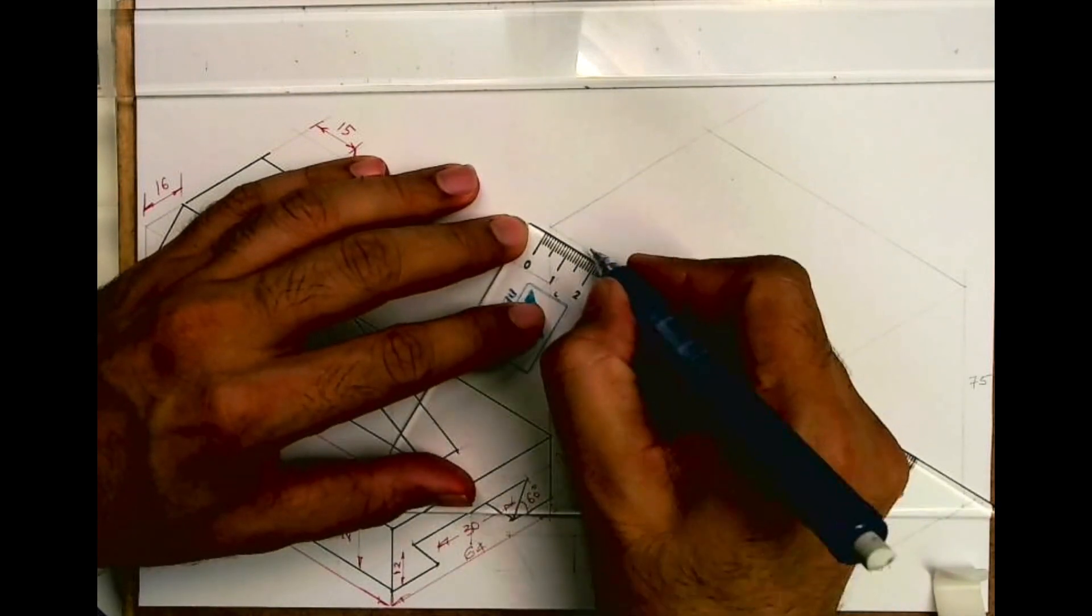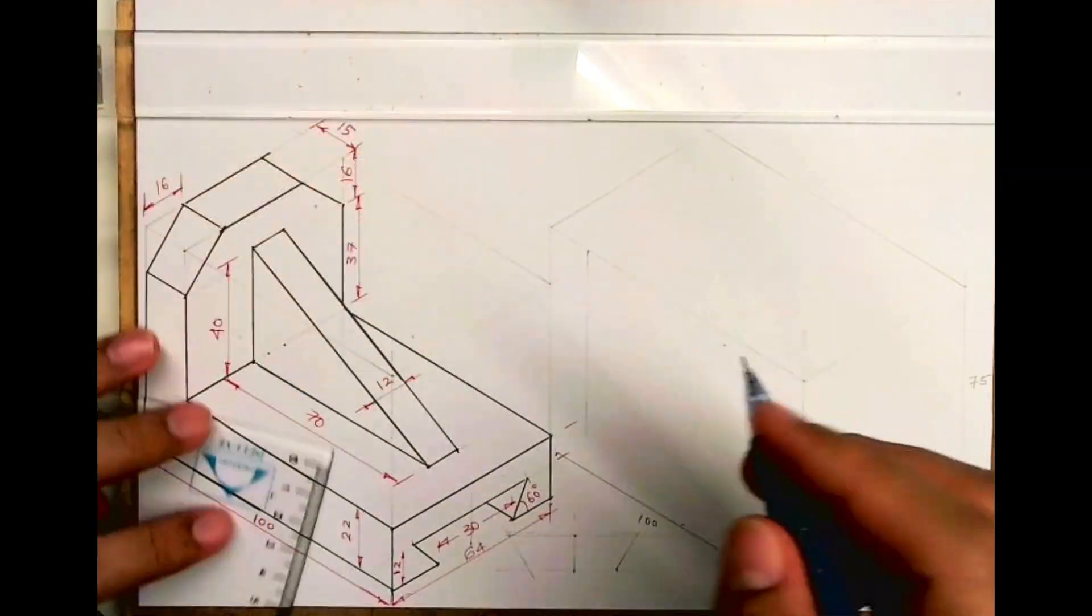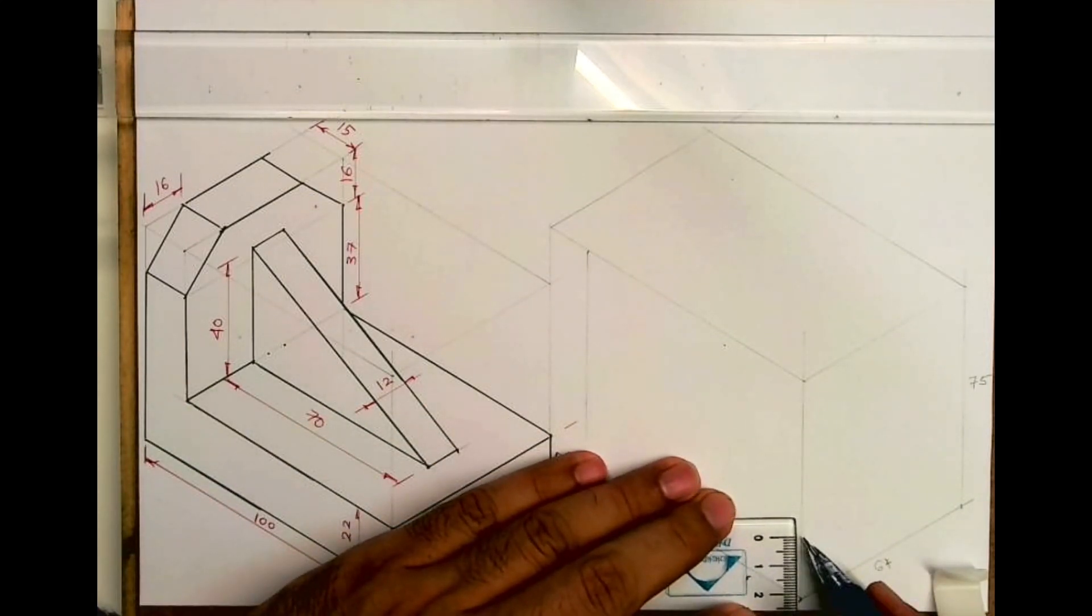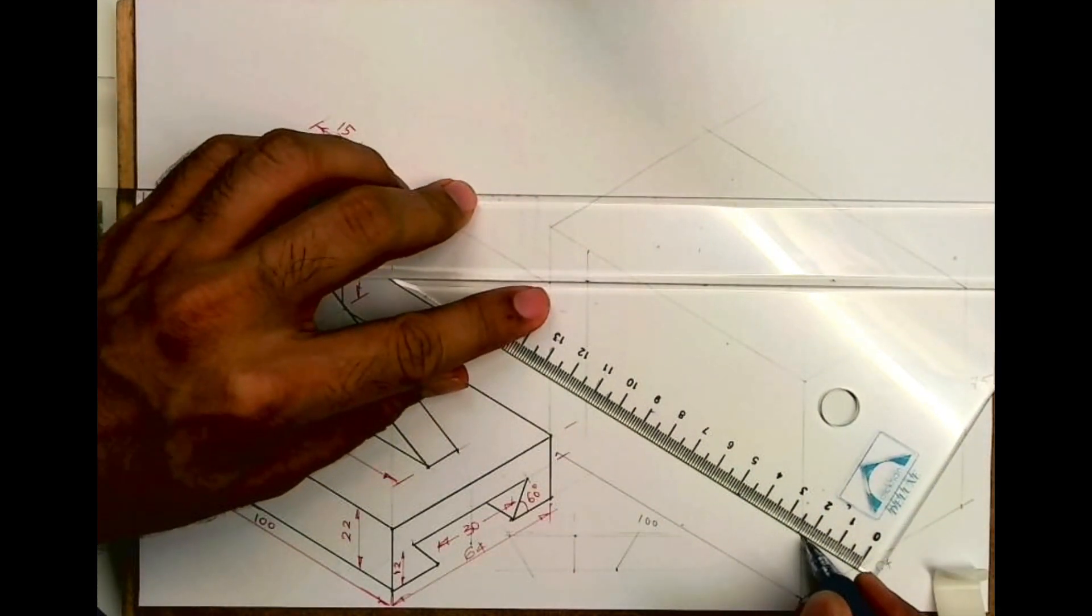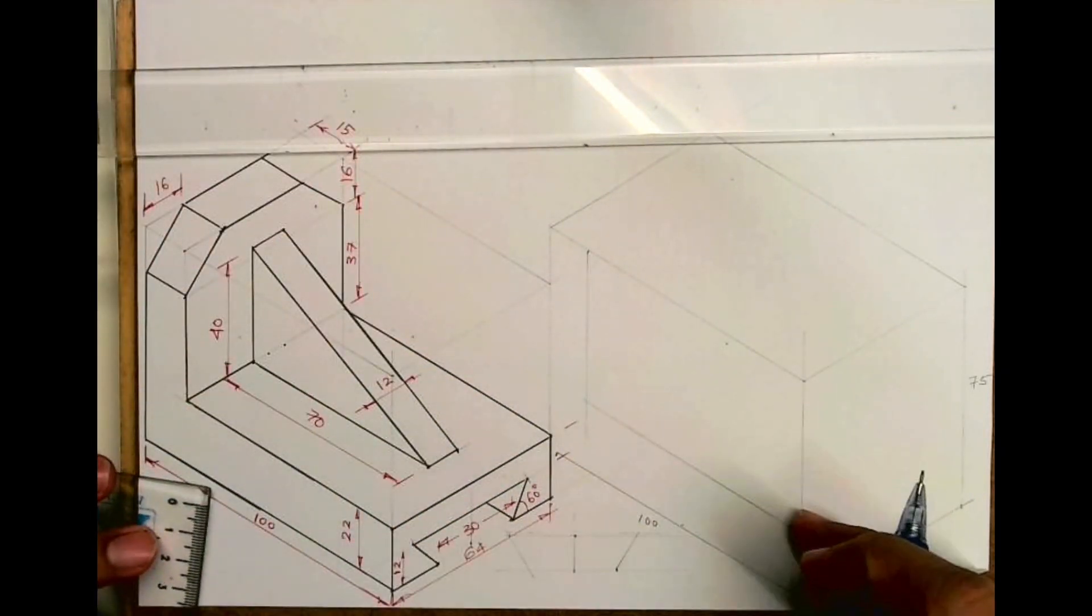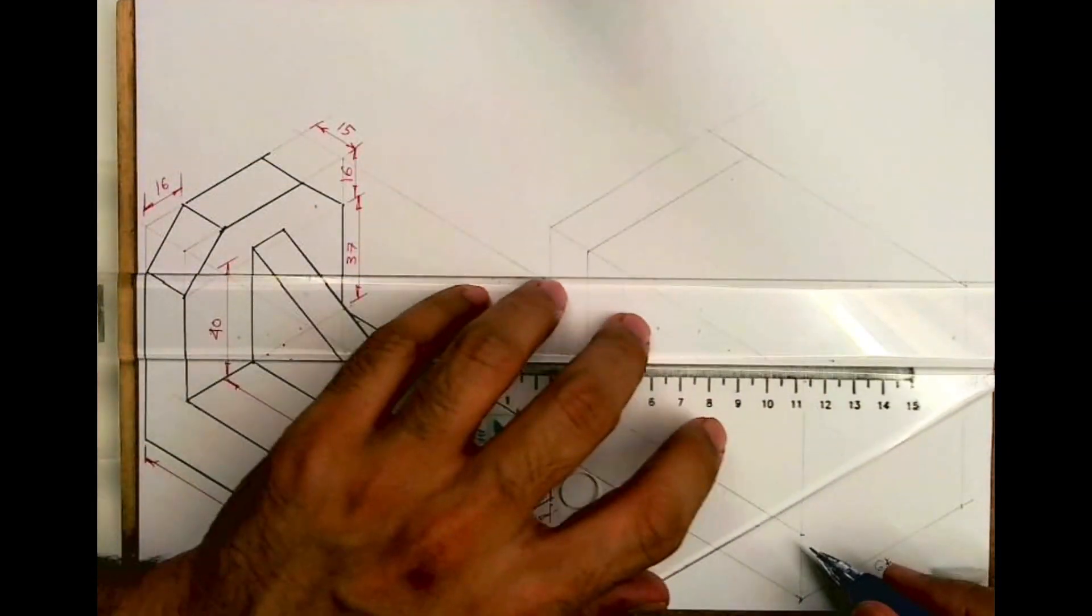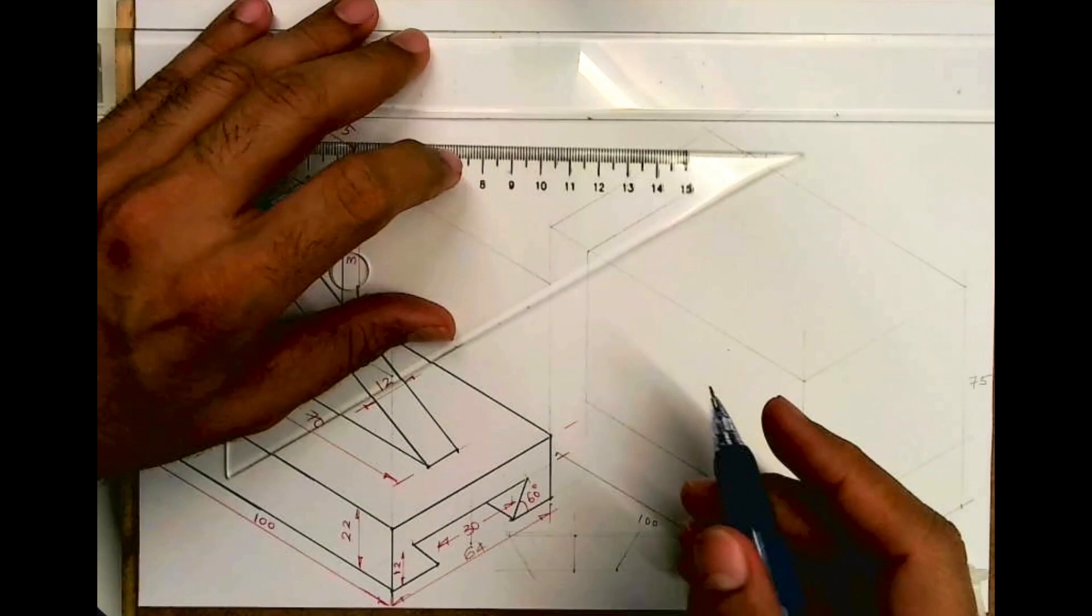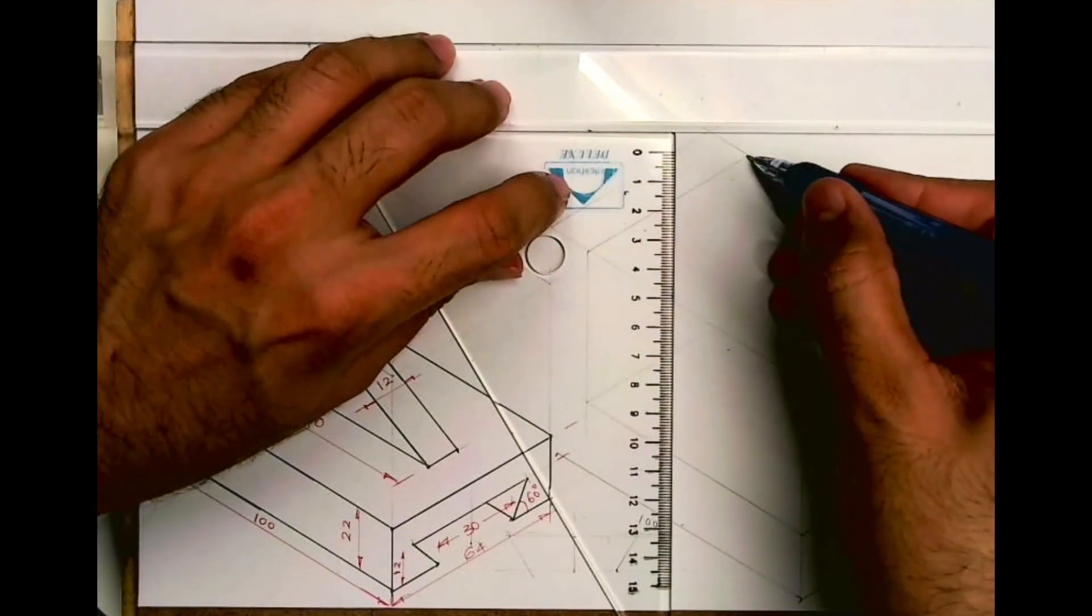I'll mark 15 over here. Now we'll go behind by how much width. Always remember, whatever is there in the front, the same thing is behind. With that concept, you can take all these three lines behind by width 64 and you complete the L-shape.